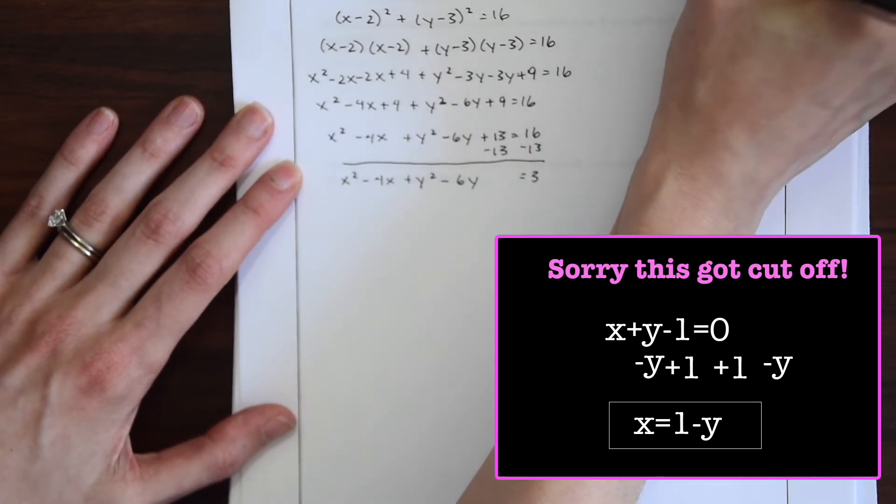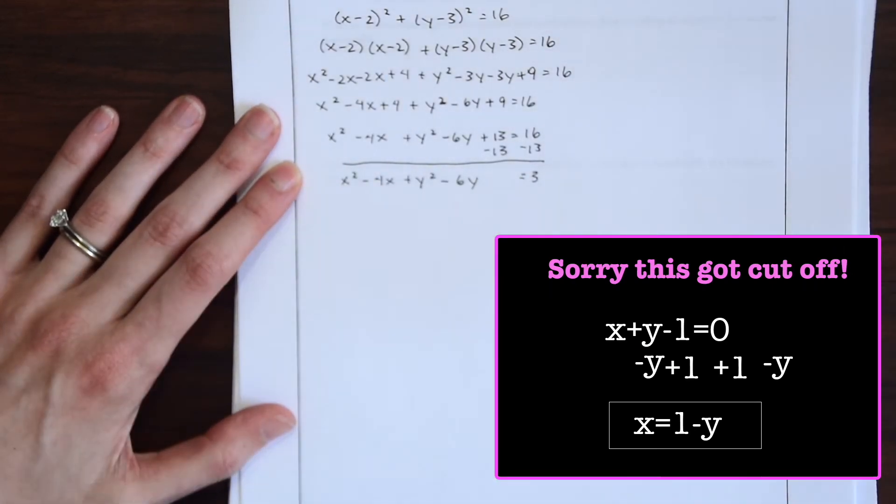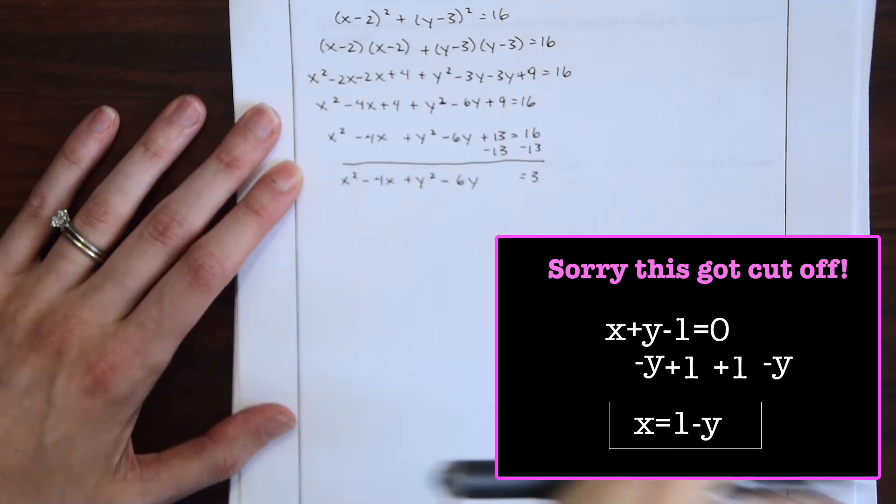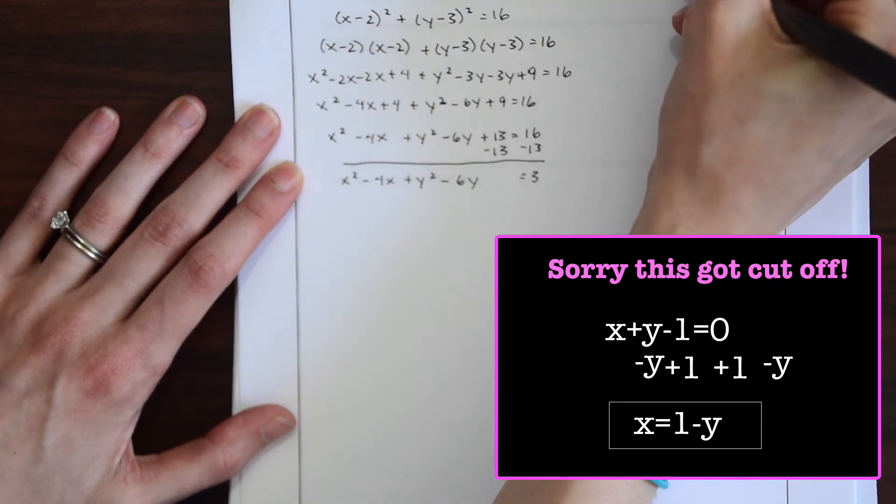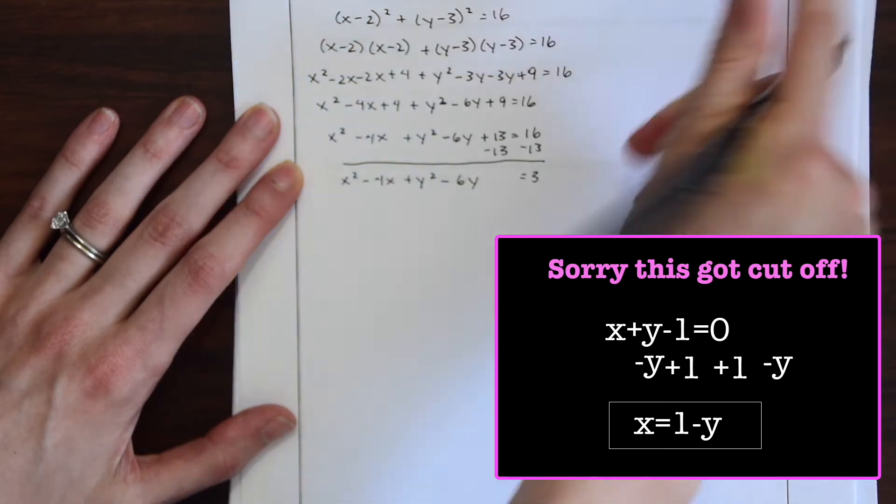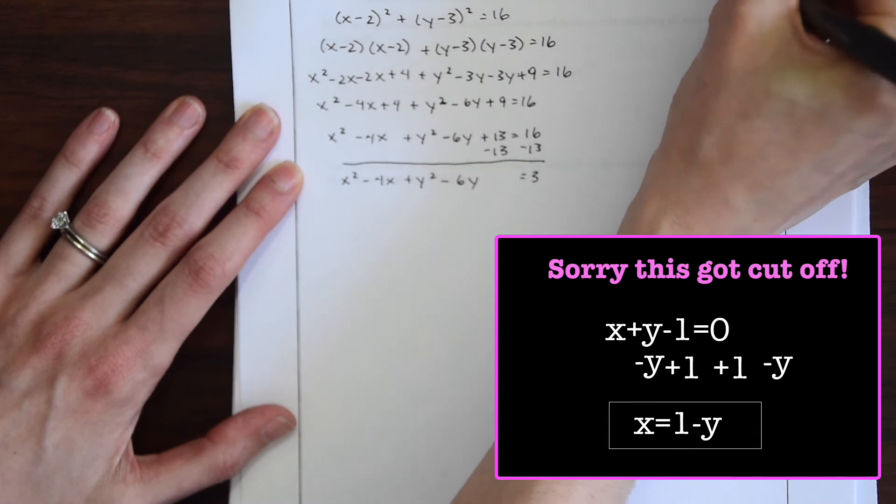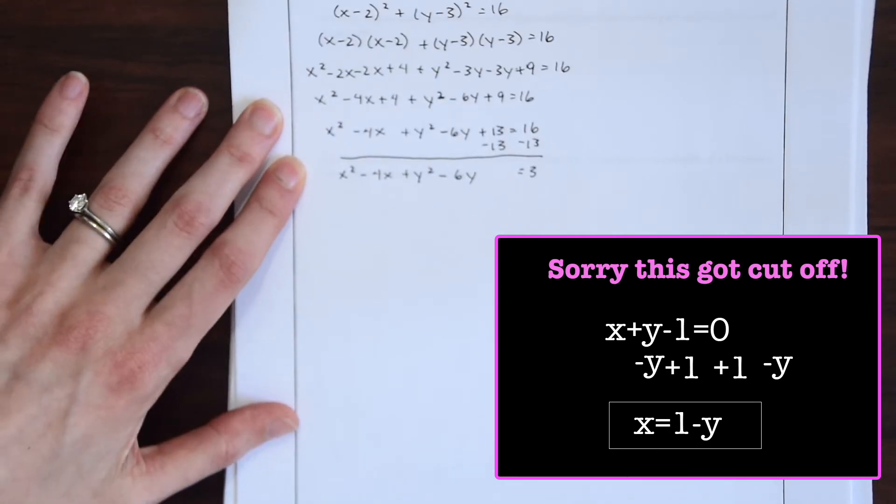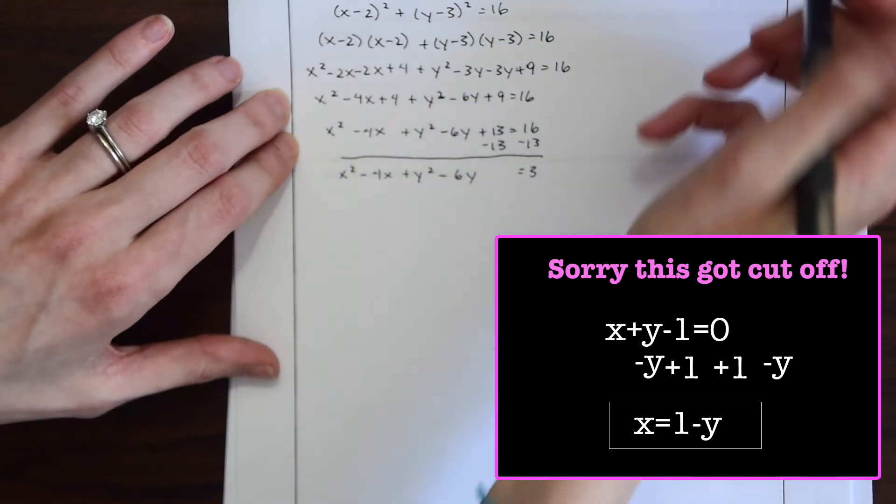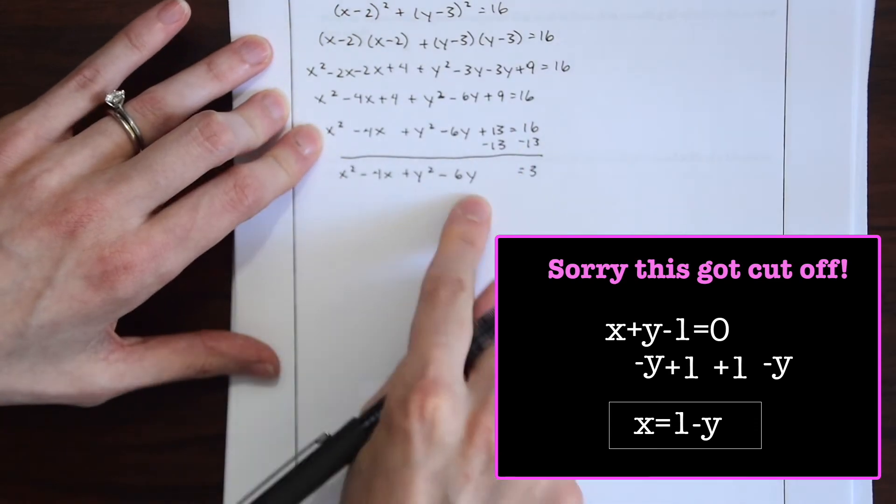So we have x plus y minus 1 equals 0. So let's move everything to the other side and see what x is equal to. So we're going to move this one and it'll become positive minus y. So we'll move the y and we'll get x is equal to 1 minus y. So now we can take this and plug it back into here.